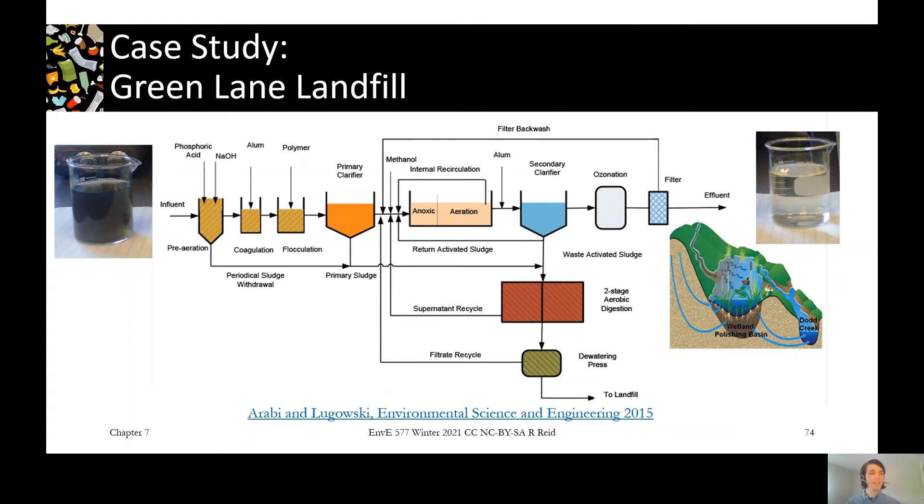And then we've got a coagulation flocculation process. So in a lot of domestic wastewater treatment plants, we go directly into the primary clarifier because we've got a lot of solids. Here we've got some more suspended solids that we want to address right off the bat. So we've got some coagulation flocculation to enhance that.